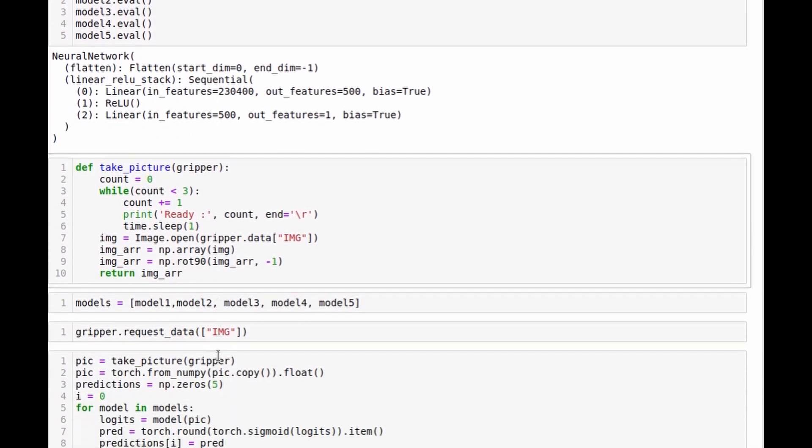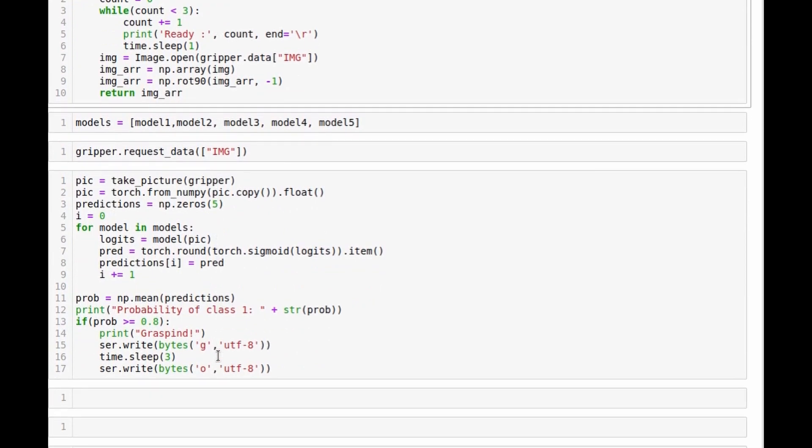And then I'm just going to take the picture from the camera, pass it through each of the models. Each of the models will output probability of the image belonging to the positive class. And then I'll just take mean prediction and use it as a result. And if this result will be greater than 0.8, the command to grasp will be sent to the gripper, and hopefully it will grasp something.